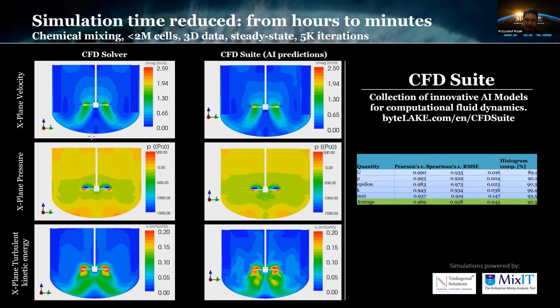In result, we have visualizations like this. On the left side we can see the original result generated by the CFD solver. On the right side we can see predictions with our AI module. Here we have three different quantities: the first one is velocity vector field, the second one is a pressure scalar field, and the last one is kinetic energy.